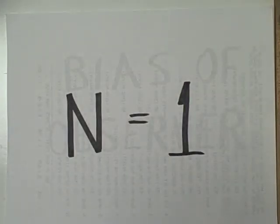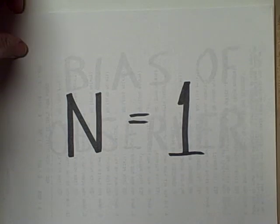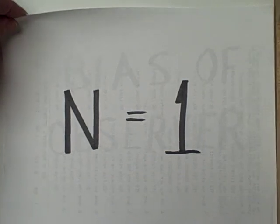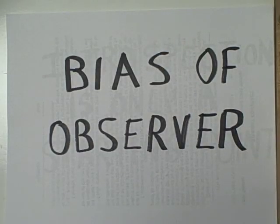There are several problems with introspection. The obvious one is that we have a pretty small sample size of n equals 1. I can only introspect on one person, myself. You can only introspect on one person, yourself. So the small sample size is one limitation.